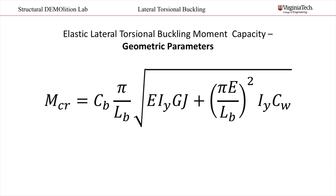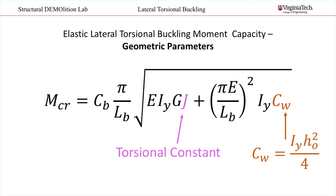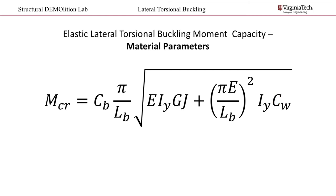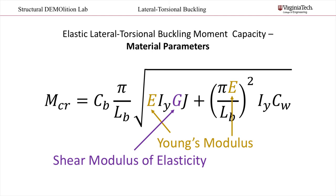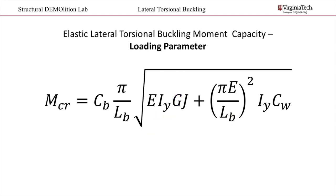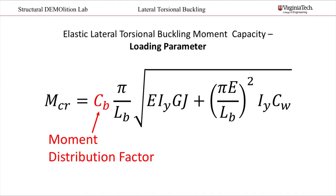There are two other geometric parameters that you may not have heard of. The first is the CW term, which can be calculated based on the moment of inertia and the distance between the centroids of the flanges. This value is related to the section's resistance to warping torsion. The other parameter is the torsional constant J. This value is tabulated for you in the front of the AISC manual. There are two material properties associated with lateral torsional buckling: the Young's modulus, or modulus of elasticity, and the shear modulus of elasticity. Lastly, there is a parameter associated with loading on the beam — this is the moment distribution factor, denoted as C subscript B in this equation.